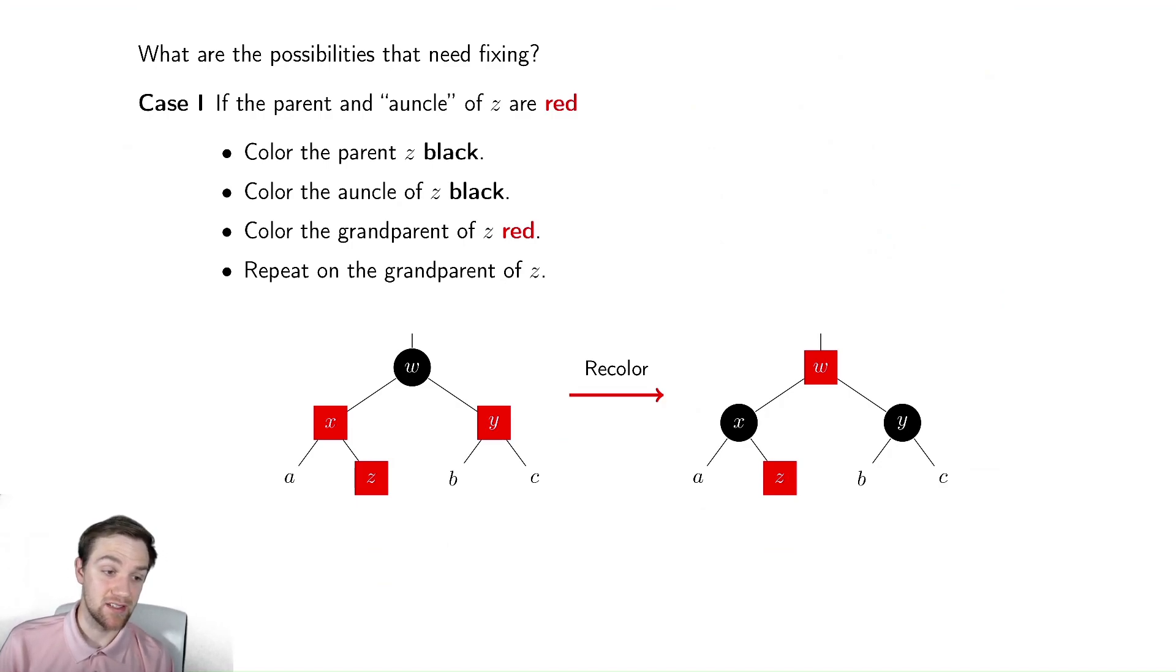So our first case here is in a very abstract picture I drew for us here. And this is trying to narrow down exactly what is breaking in the tree. If the parent and uncle, uncle here being the gender neutral term for uncle, this is the sibling of the parent, are red. So in our picture, Z got inserted and then X and Y were red. If that's the case, how are we going to fix it?